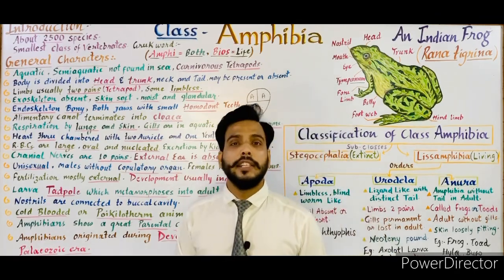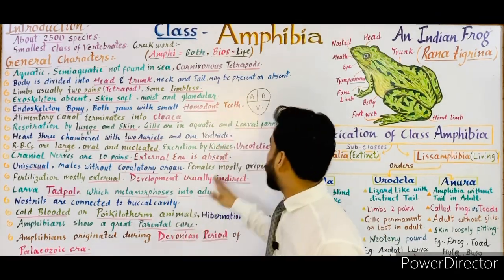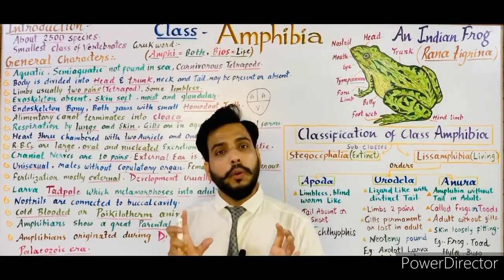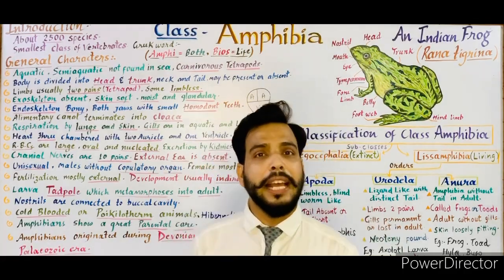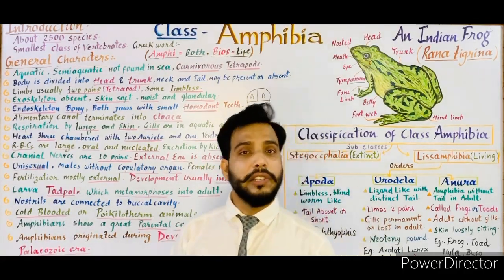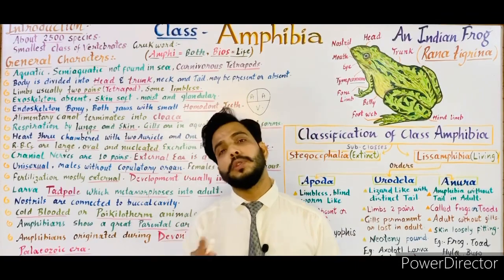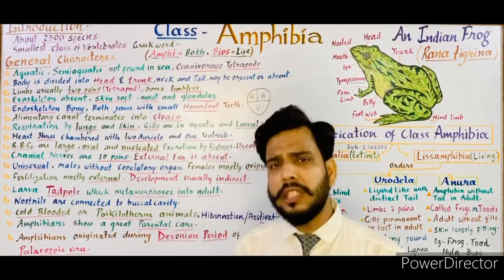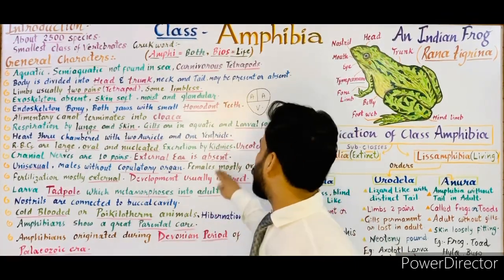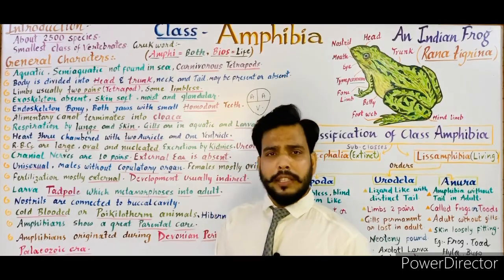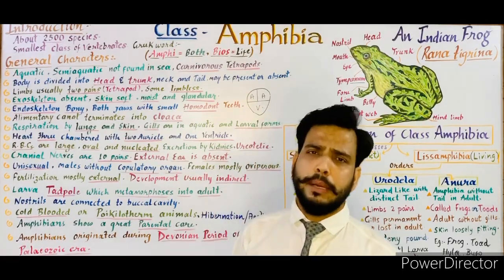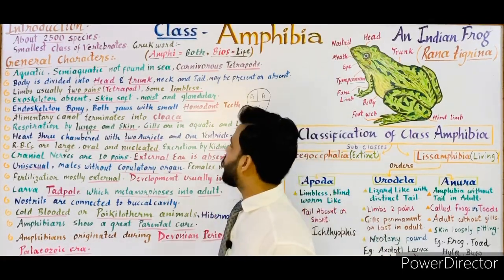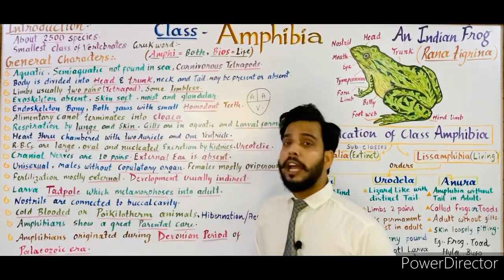Excretion takes place by kidneys. Amphibians are ureotelic, meaning they excrete urea as their primary nitrogenous waste. Most amphibians are ureotelic, though sometimes they may be ammonotelic. The next character is that cranial nerves are 10 pairs.